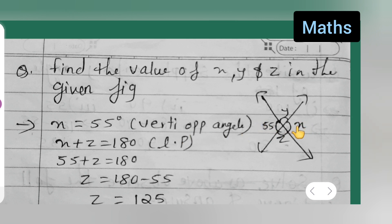Then you will have to take a linear pair, that is x plus z. Because x is we already got, that is 55. So x plus z is equal to 180. This is a linear pair.